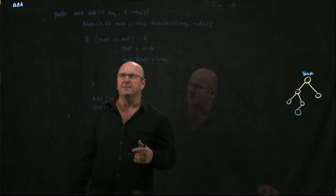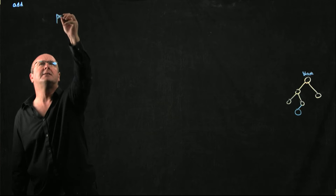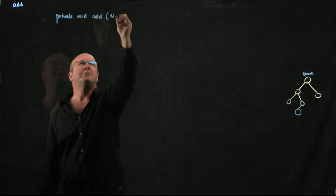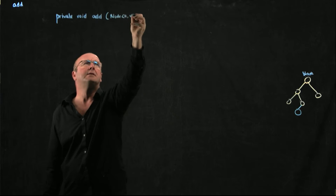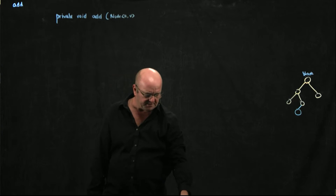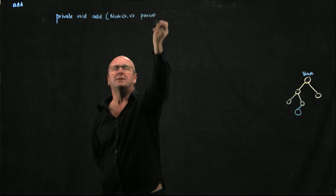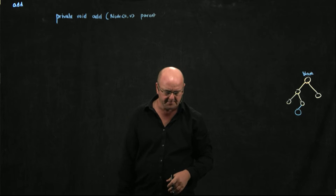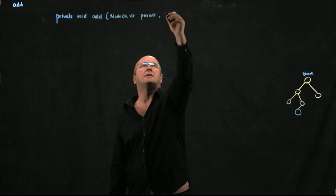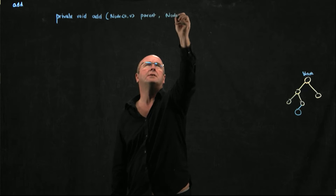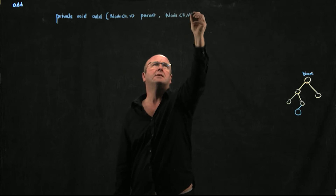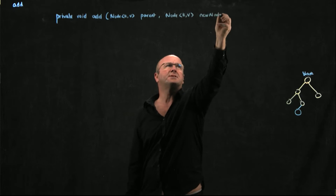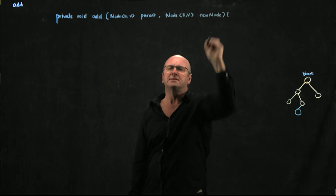Now for our private method — it's going to take a node KV which is our current node, and I'm going to call that 'parent', because eventually it will end up being the parent of the node that we're adding. It's also going to take a node KV that I'll call 'newNode', because that's the node we've just created and want to add to the tree.